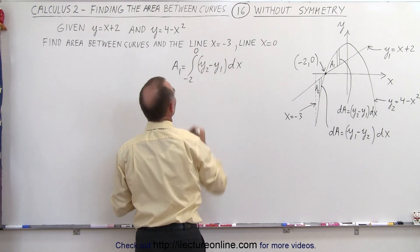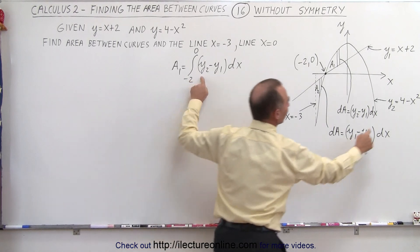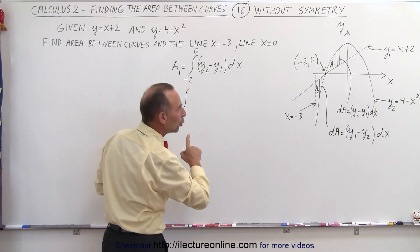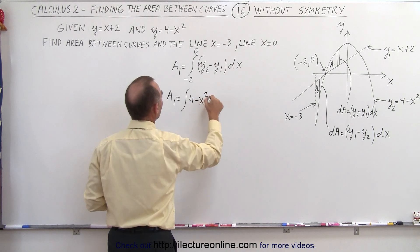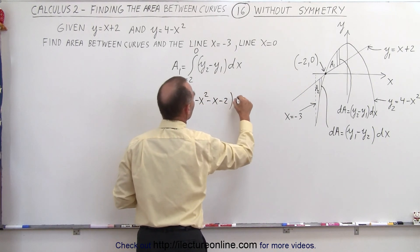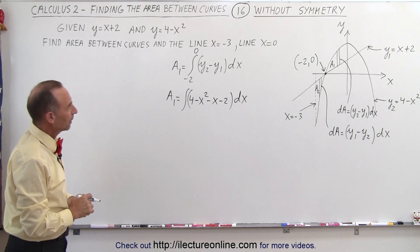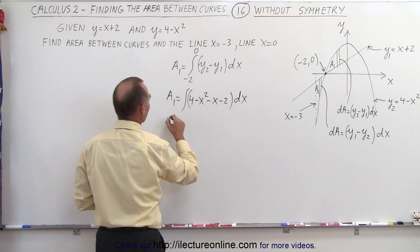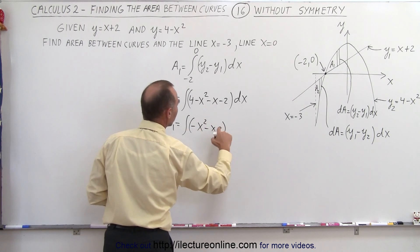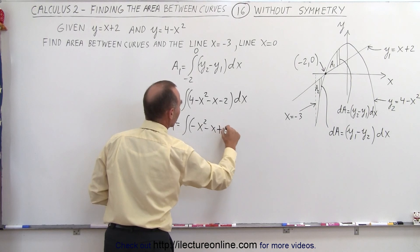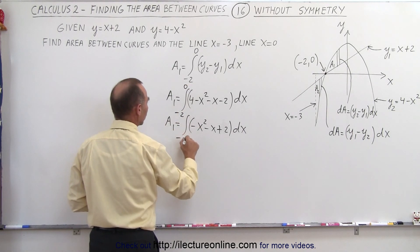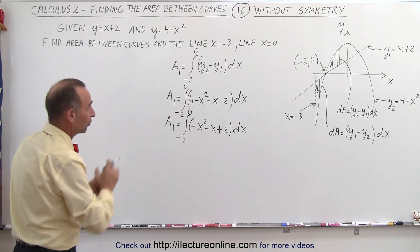From negative 2 to 0 for the first integral. Notice that y2 is defined here and y1 is defined there. So A1 is equal to the integral of y2, which is 4 minus x squared, minus y1, and y1 is x plus 2, so it becomes minus x minus 2, times dx. Simplifying, A1 is equal to the integral of negative x squared minus x plus 2 times dx, with limits from negative 2 to 0.